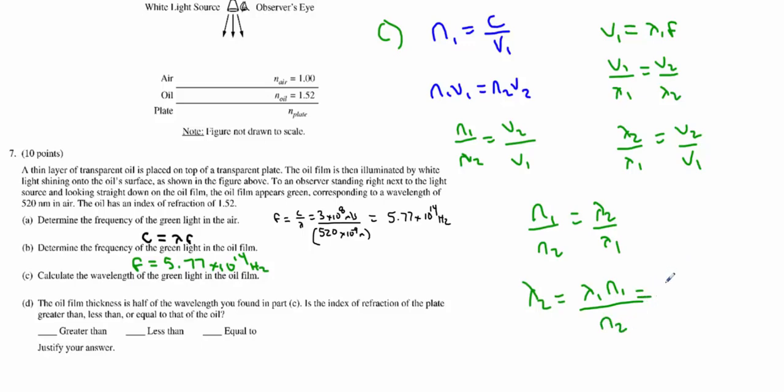Since we know the wavelength of the light in the first index is 520 nanometers, we know the index of air is 1, so this will just be the 520 nanometers divided by 1.52. Now this will give me my wavelength in nanometers, which is perfectly appropriate as long as you actually write nanometer and not meter. 342 nanometers is the answer.